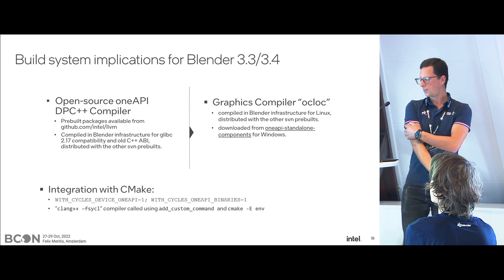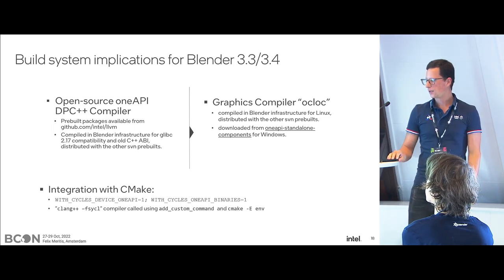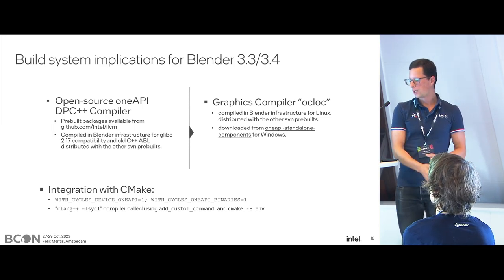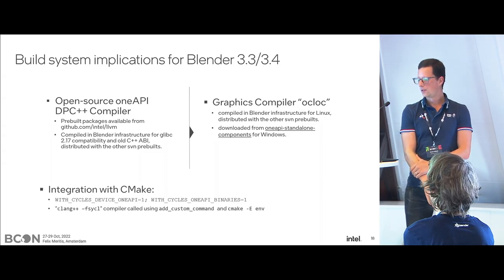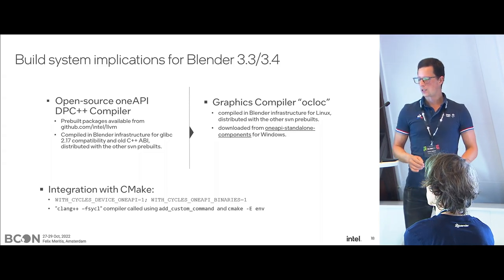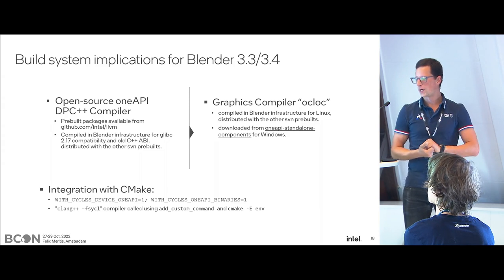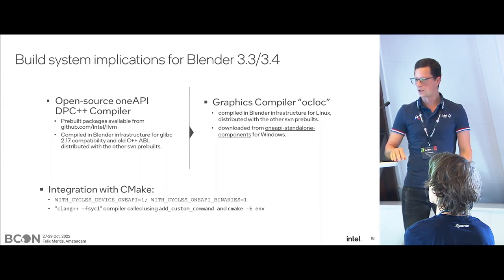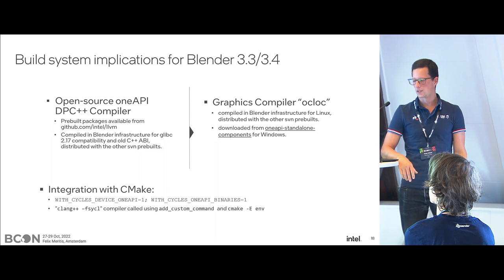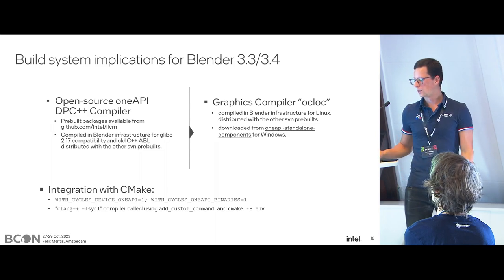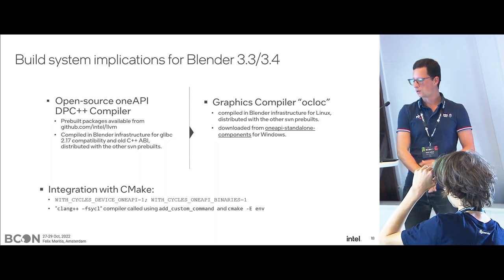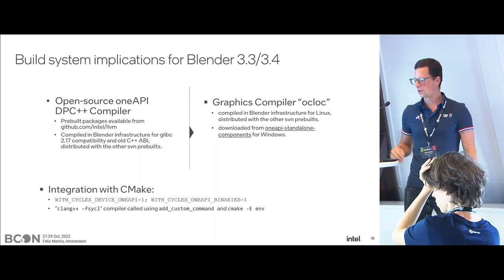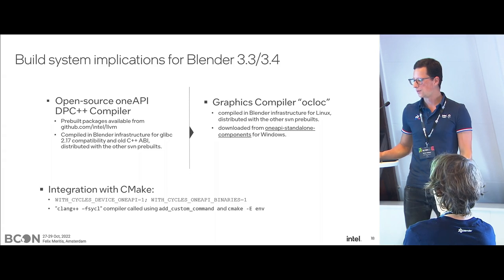CMake integration works the same as HIP — we have CYCLES_DEVICE_ONEAPI and CYCLES_ONEAPI_BINARIES as build options. Internally it calls the DPC++ compiler (named clang++ here) with -fsycl to compile SYCL code, handled using add_custom_command with proper environment variables.